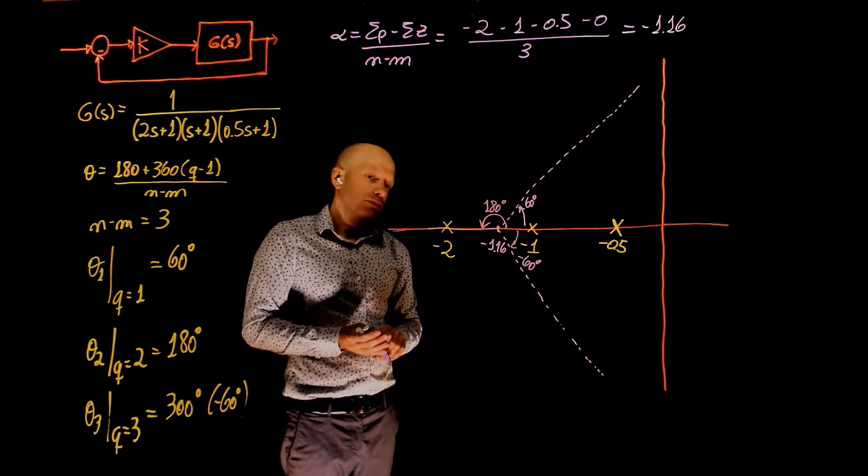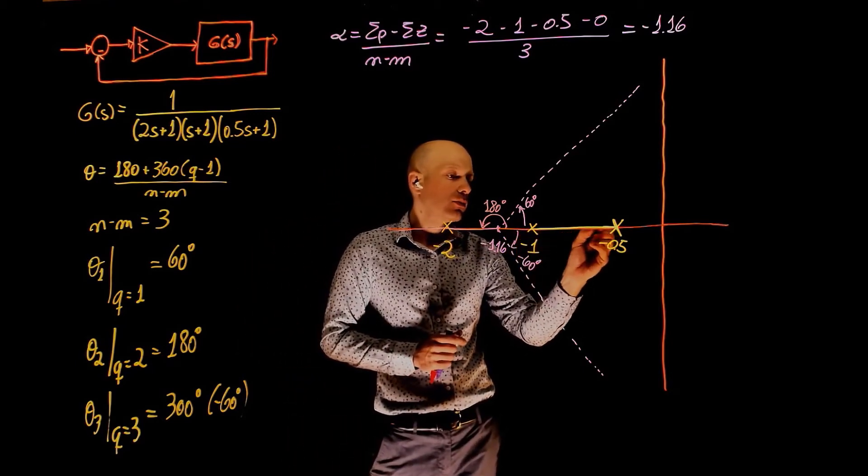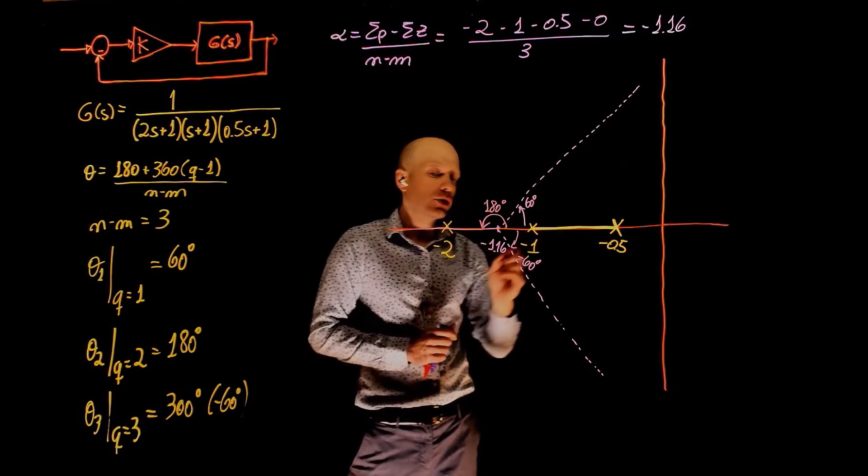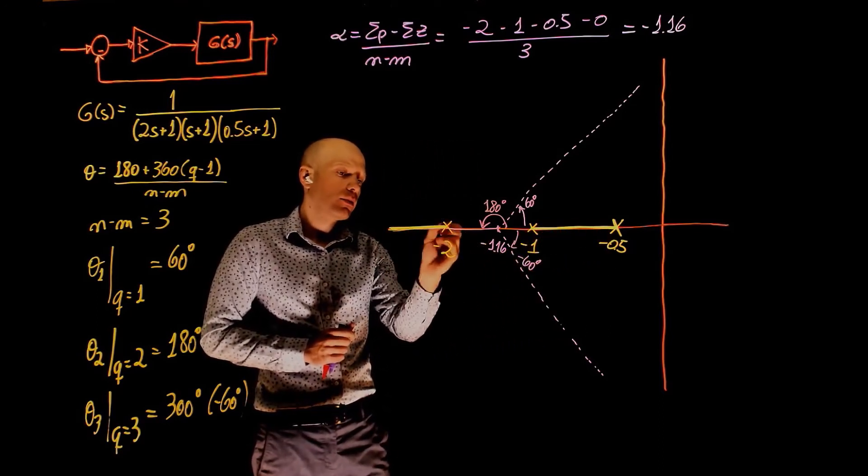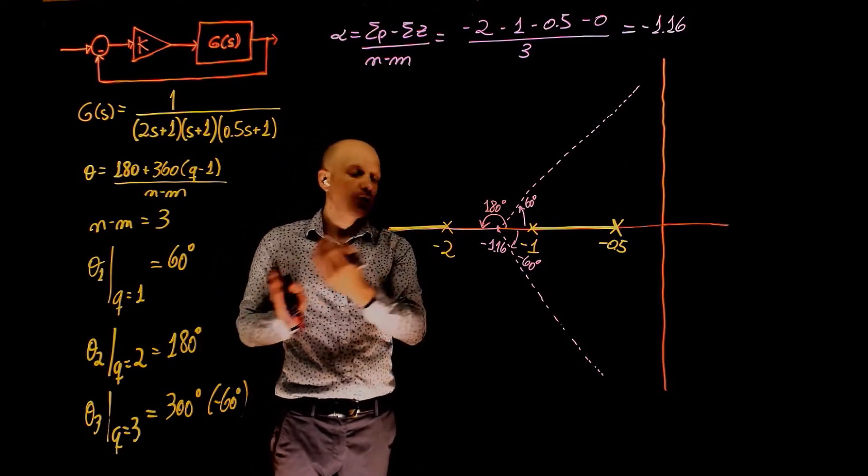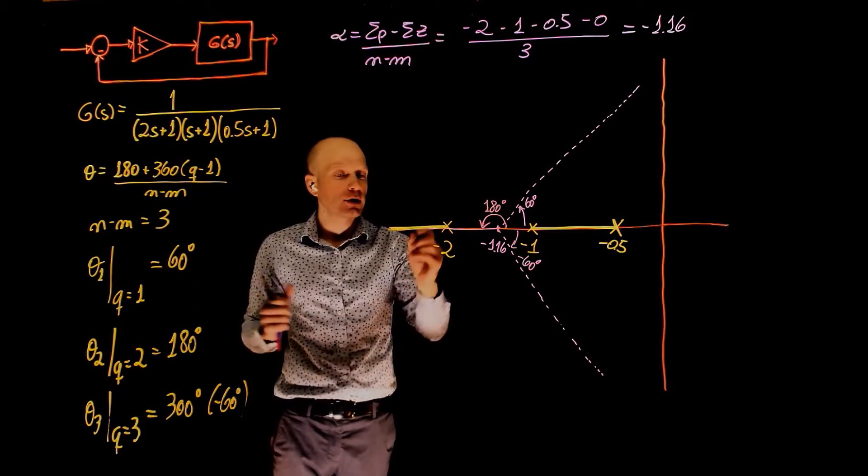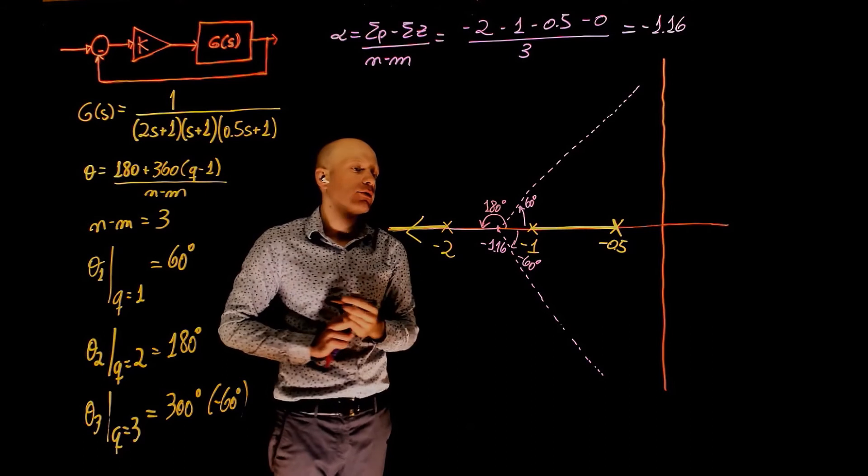Now where is the root locus? The root locus is between these two, as we determined before, and is to the left of negative 2. So here it's easy, negative 2 has a root locus to its left and you have the asymptote going to negative infinity. So this pole, as k goes from 0 to infinity, goes to negative infinity.